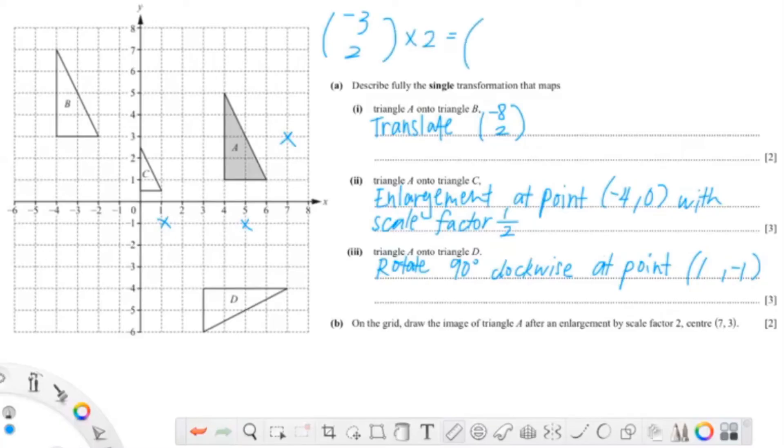It's a vector of minus 3 and 2, so times 2, it will be minus 6 and 4. So 4 units up and 6 units to the left. Now I'm just going to use my ruler to draw this triangle—the second line and the third line.